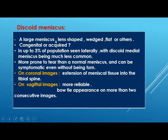A discoid meniscus is a large, lens-shaped meniscus of any shape. Whether it is congenital or acquired is not known. It is seen in up to 3 percent of the population, laterally, with the discoid medial meniscus being much less common. It is more prone to tear than a normal meniscus. On coronal images, extension of meniscal tissue is seen into the tibial spine, while on sagittal images the bow-tie appearance is seen on more than two consecutive slices.